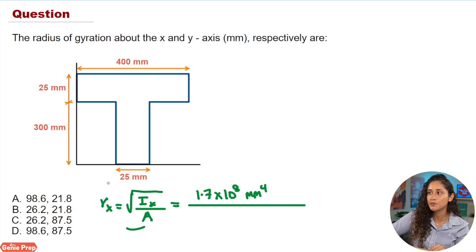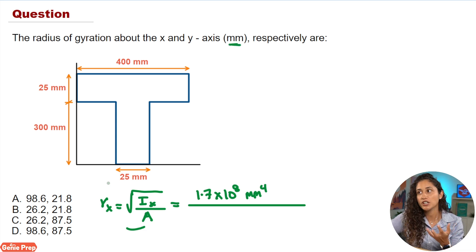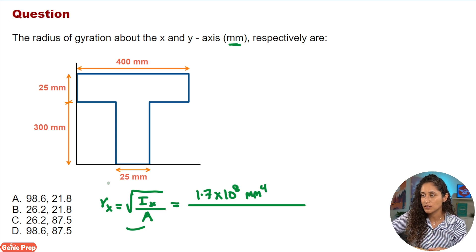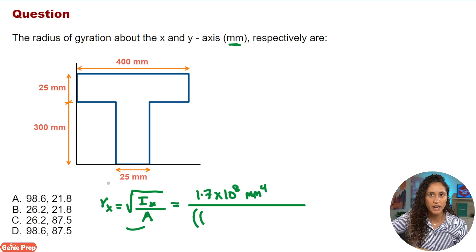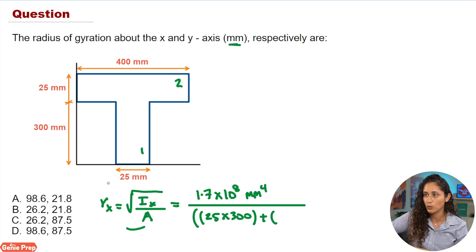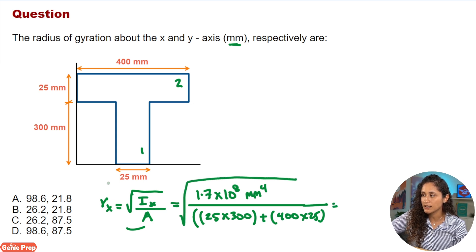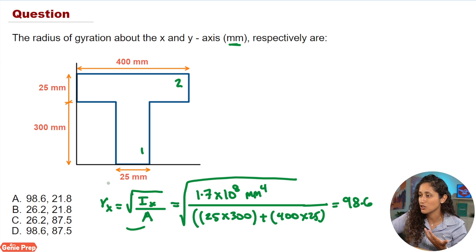Let's keep track of units since the radius of gyration must be in millimeters. We divide Ix by the total area: for shape one it's 25 times 300, and for shape two it's 400 times 25. Then we take the square root of the whole expression, and plugging into the calculator gives us 98.6.